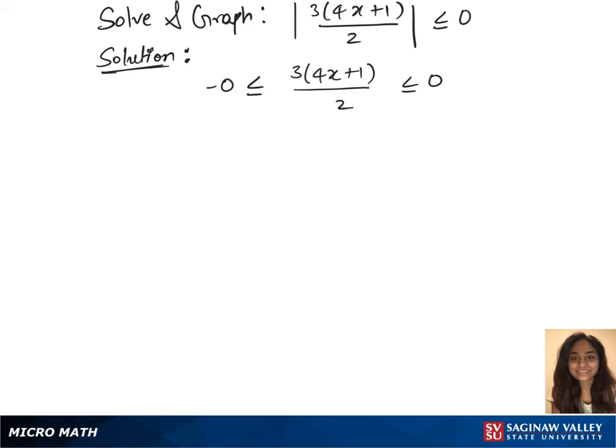Minus 0 is just 0, so we'll write 0 less than or equals to 3 times 4x plus 1 over 2, less than or equals to 0.